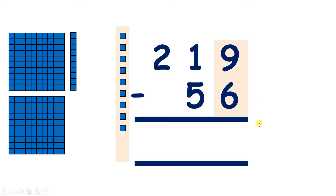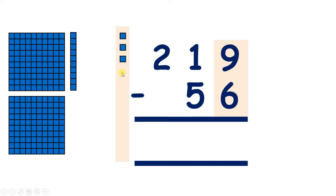So we start with the units — we have 9 — so we can take away 1, 2, 3, 4, 5, 6, and that leaves us with 3 units.